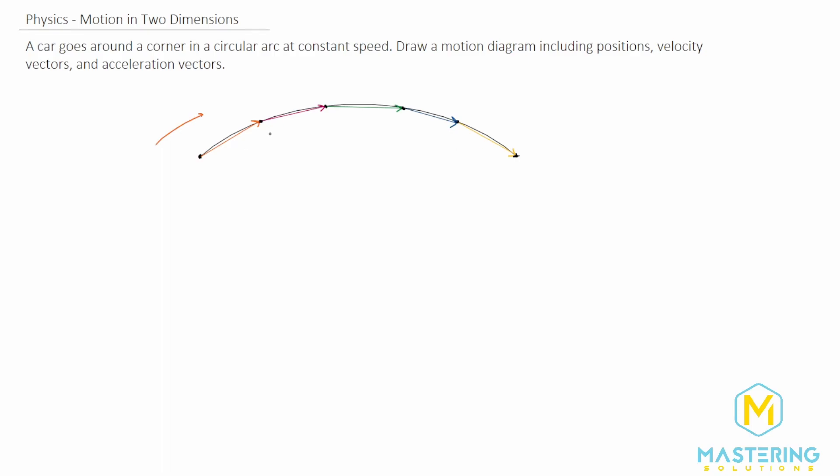You can see that it's going at the same speed because the length of the velocity vectors are all the same. And if you remember that velocity is not scalar, meaning that the direction and the magnitude are both important. So even though the speed is the exact same, because it's changing direction as it goes around the arc, it is different velocity, meaning that there is some sort of acceleration with this.